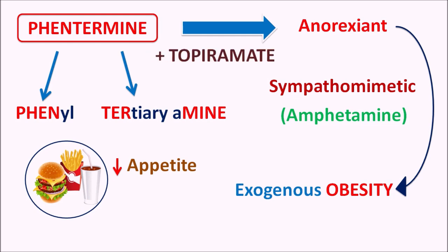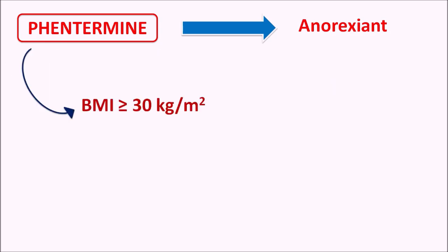Phentermine can be combined with other drugs such as topiramate, which is an anti-epileptic, but this combination can also be used to control appetite in order to minimize obesity. Phentermine is used in patients with a body mass index (BMI) greater than 30 kg/m², where BMI is measured as the ratio of weight in kg to height in square meters. When BMI is greater than or equal to 30 kg/m², it indicates overweight, and Phentermine can be used to control appetite.